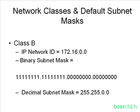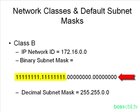Let's move on to class B. Our IP network ID is in the 172.16 range. Since class B has the first and second octets dedicated to the network, the binary subnet mask will have all ones for the first and second octets, and then the third and fourth are all zeros. Every bit position in octets one and two must be a one, and the opposite is true for octets three and four — both are entirely dedicated to the host portion. The dotted decimal notation is 255.255.0.0.